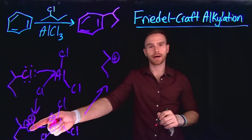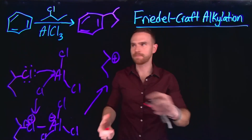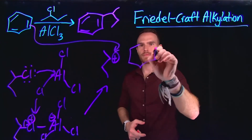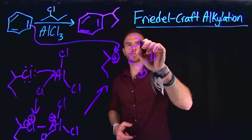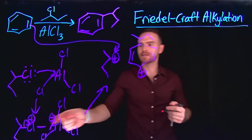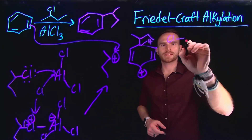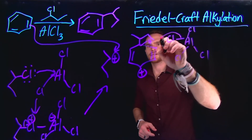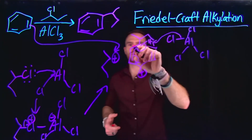This generates a carbocation, and this is the perfect opportunity for the pi electrons to act as a nucleophile for this activated carbocation. When doing so, this allows us to form the arenium ion, where now the new alkyl group has been added. Remember there are three different resonance structures, and we still have plenty of the activated Lewis acid compound left over, which can then deprotonate one of these protons, kicking off the electrons and regenerating our aromatic compound to give us our final product.